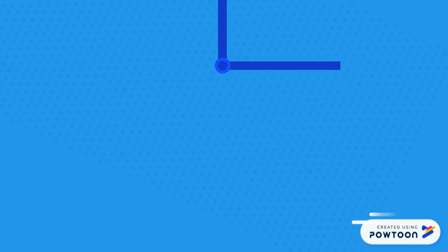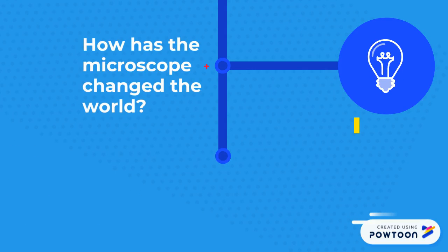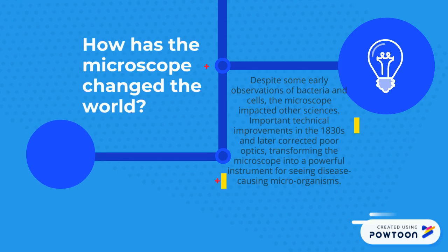How has the microscope changed and developed? Despite some early observations of bacteria and cells, the microscope impacted other scientists too. Important technical improvements happened in the 1830s, and that transformed the microscope into a powerful instrument. Till this day, it's being changed and improved for the better.